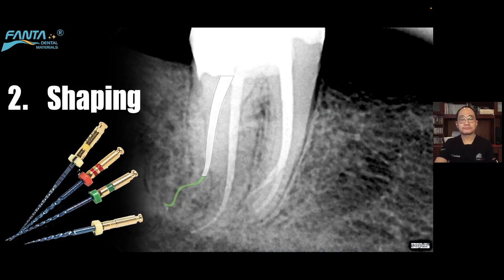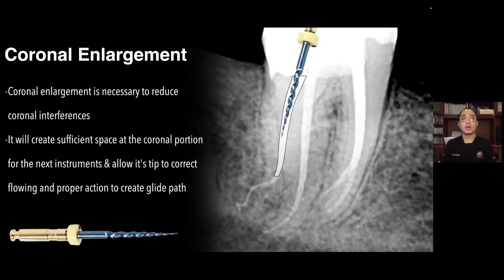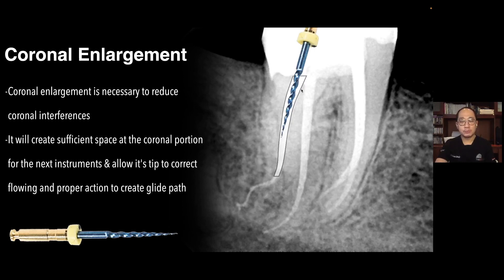After creating the access cavity, we continue to the most important part: safely shaping the root canal. First, we need to create coronal enlargement. By doing coronal enlargement first, we reduce coronal interference and create sufficient space at the coronal portion for the next instruments to go in. This allows proper instrument action to create the glide path. Without coronal enlargement, instruments used to create the glide path will encounter coronal interference, leading to taper lock and instrument fracture.